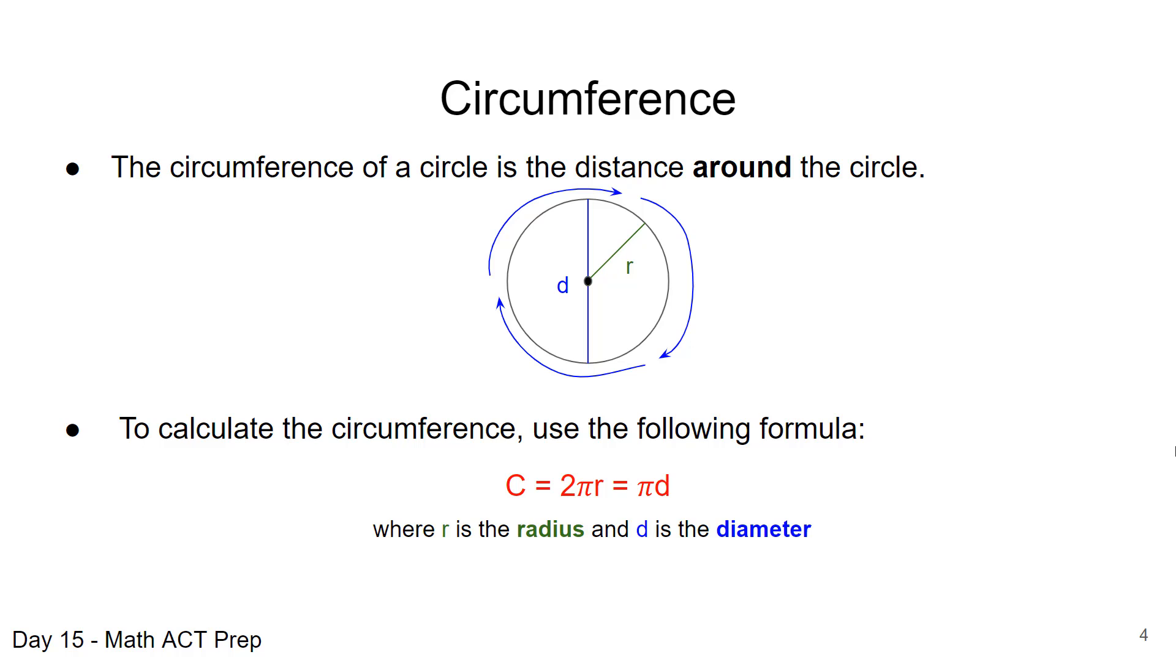So if you're given the radius, it's going to be 2πr, and if you're given diameter, it's just πd, because we know that the relationship between radius and diameter, 2 times the radius equals the diameter.